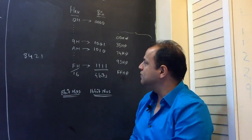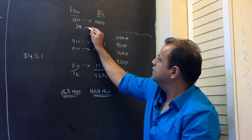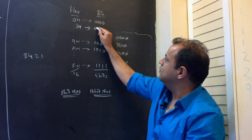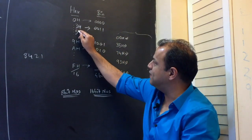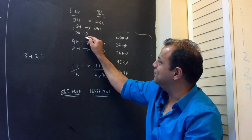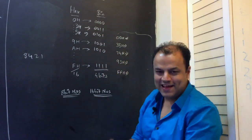A little faster now by yourself. I want 3 — what is 3? 0011. I want 5 — what is 5? 0101.